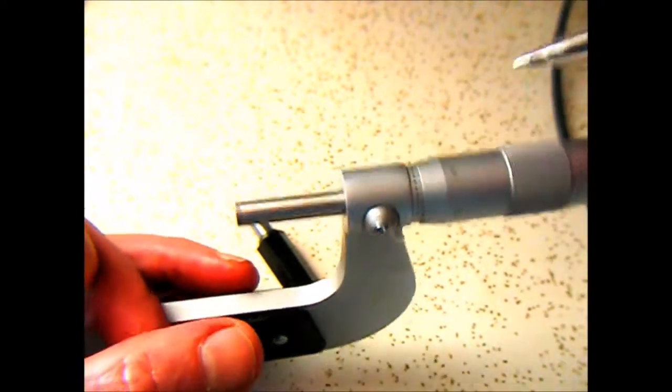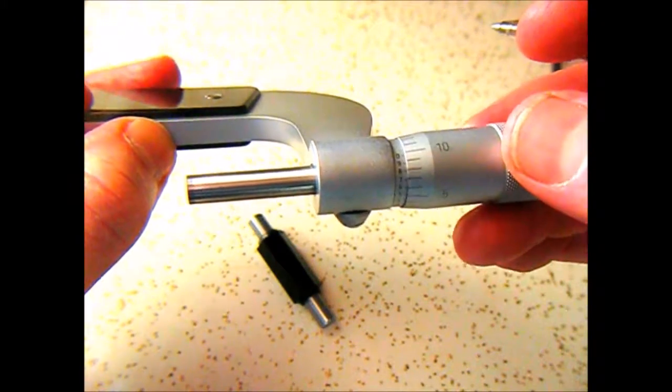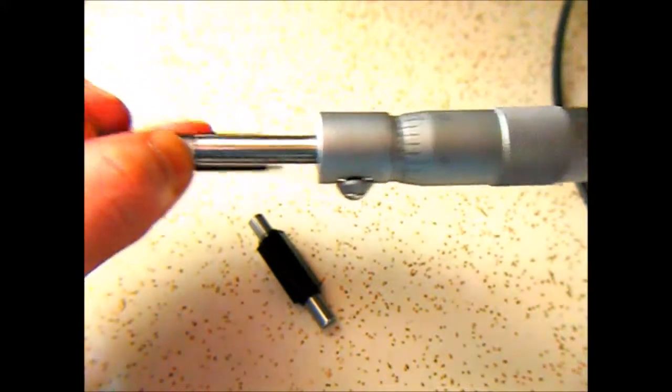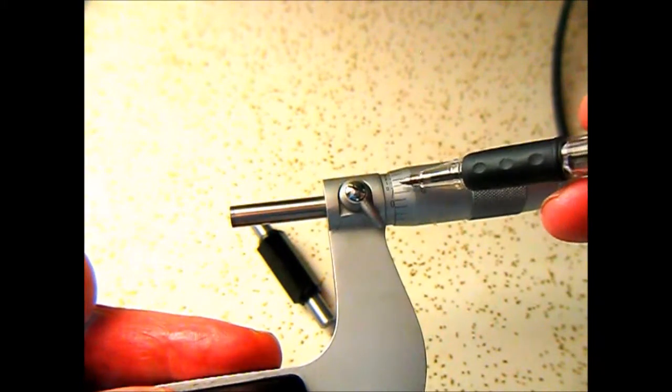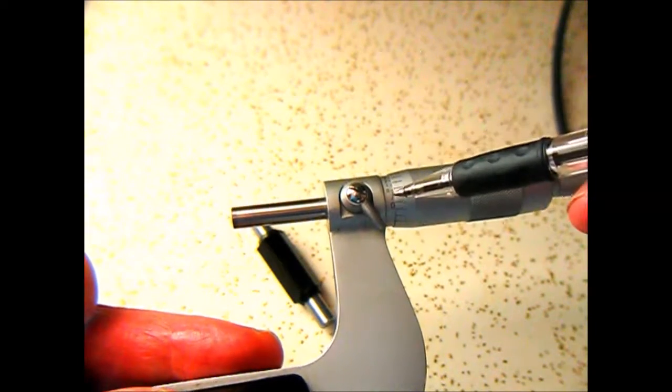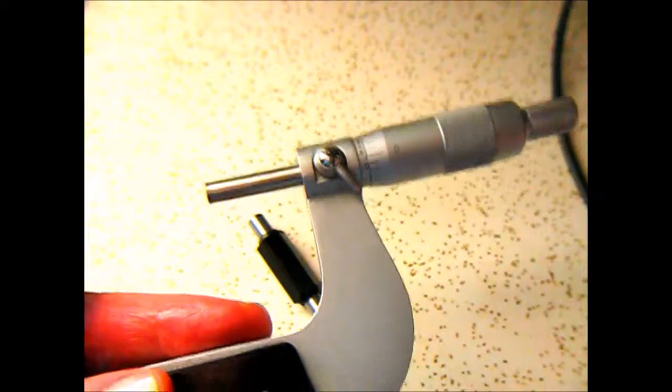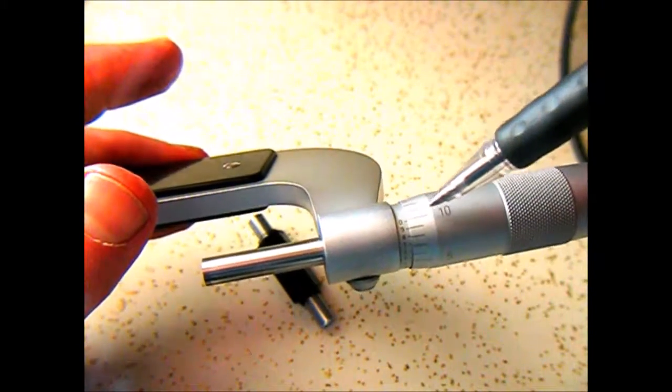When you get all the way up to the end to zero, which is right there, the ten lining up with the zero means that the one one-thousandth is lined up with the zero down here. That means you've got one one-thousandth or ten ten-thousandths.